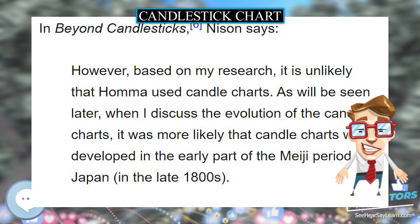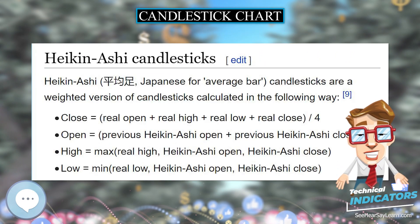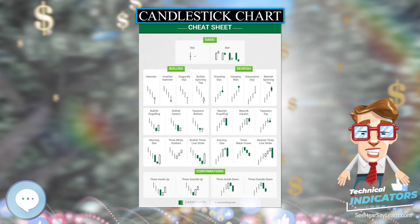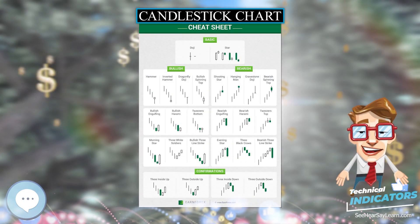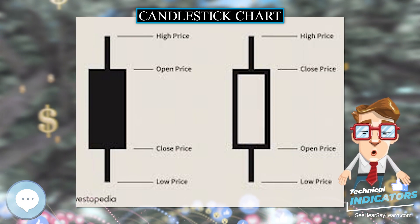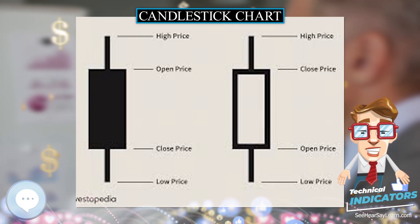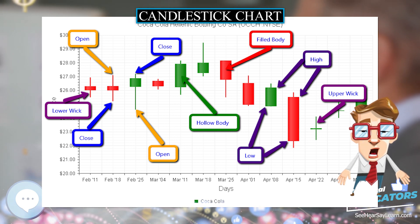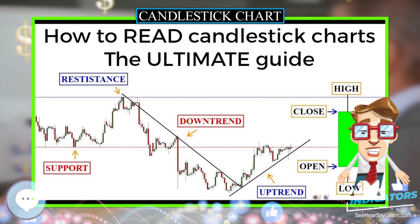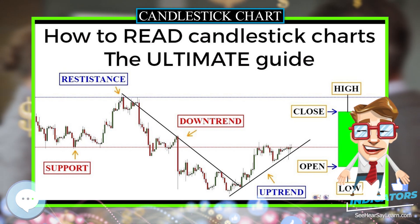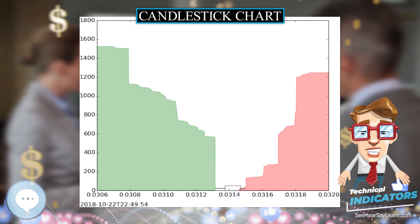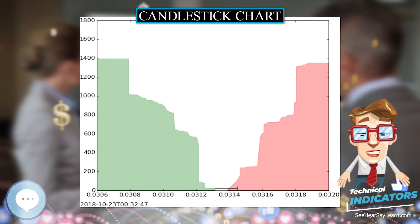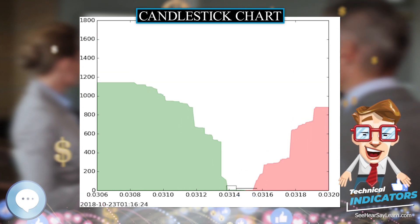Candlestick charts are similar to box plots. Both show maximum and minimum values. The difference is in the information conveyed by the box between the max and min values. The top and bottom edges of the box in a box plot show the 75th and 25th percentile values respectively, with the bar inside showing the 50th percentile. The top and bottom edges of the box in a candlestick chart show the initial and final values, with the color of the box indicating whether the initial value is higher or lower than the final value.